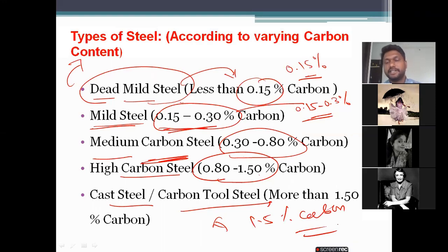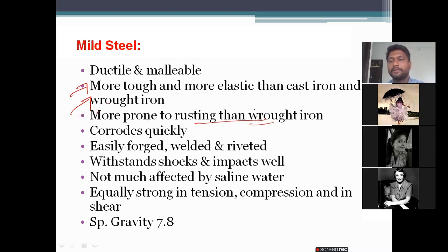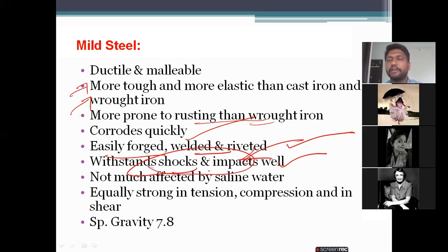Mild steel is ductile, tough, and more elastic than cast iron. It is more prone to rusting than wrought iron — that's why we use paint or enamels to reduce corrosion. It is easily forged, welded, and riveted, and it can withstand shocks and impacts. It is not much affected by saline water and is equally strong in tension and compression.